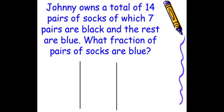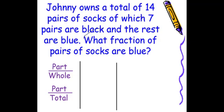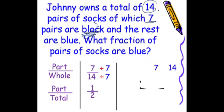Let's take a look at this problem. Johnny owns a total of 14 pairs of socks, of which 7 pairs are black and the rest are blue. What fraction of the pairs of socks are blue? When writing the fraction, it's going to be part to whole or part to total. We know there are 7 black socks, so we must have 7 blue, because the total is 14. That means 14 minus 7 is 7. So it would be 7 over 14. To simplify, divide numerator and denominator by 7, and the answer is 1 half. You could also use a factor bracket — factor out a 7, and 7 divided by 7 is 1, and 14 divided by 7 is 2, giving us 1 half as well.